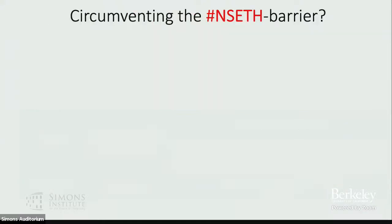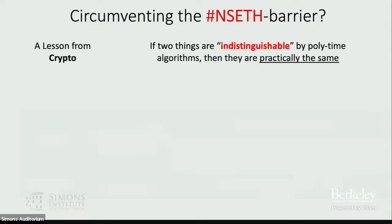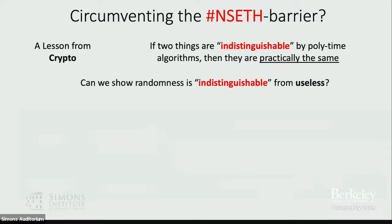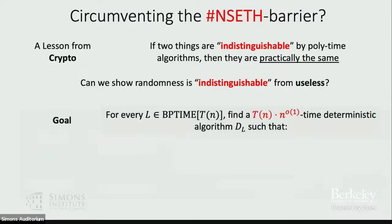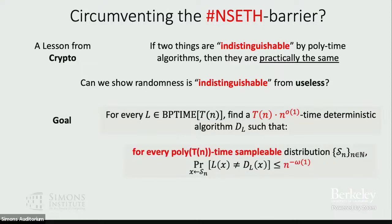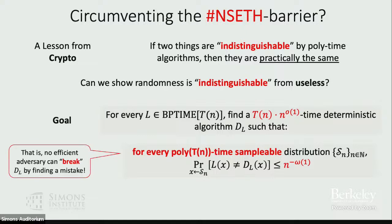How do we circumvent the Sharp-NSETH barrier? One lesson from cryptography is that if two things are indistinguishable by polynomial time algorithms, we can practically say they are the same thing. Inspired by this notion, can we show that randomness is indistinguishable from useless? By this I mean: for every T(n)-time randomized algorithm, we want to find a deterministic algorithm with slightly more running time such that for every polynomial-time sampleable distribution, it is very hard to find a mistake — it is correct under every polynomial-time sampled distribution except with negligible probability. So no efficient adversary can break your deterministic algorithm by finding a mistake.